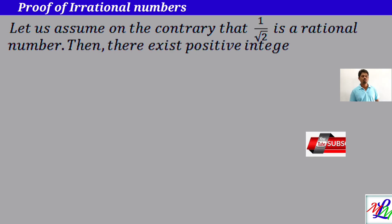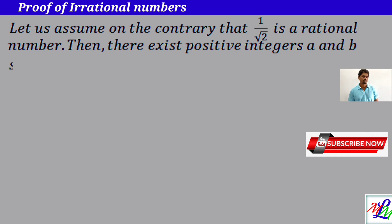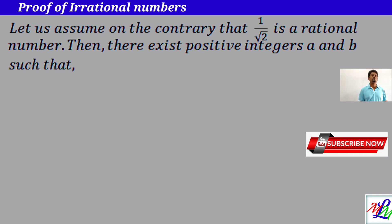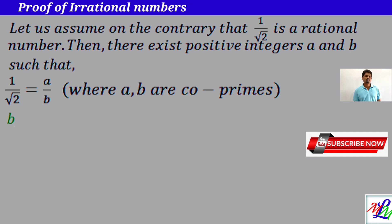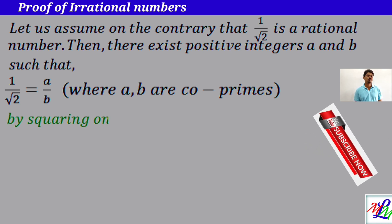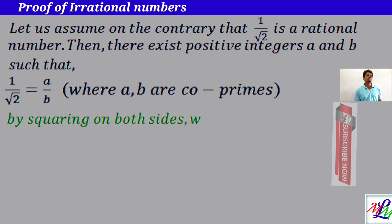Then there exist positive integers a and b such that we can write 1 by root 2 is equal to a by b, where a and b are co-primes. By squaring on both sides we get the following.